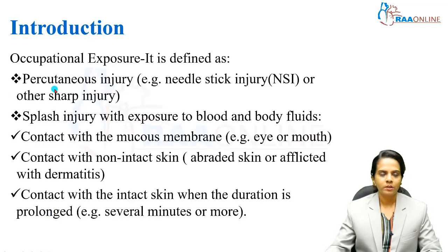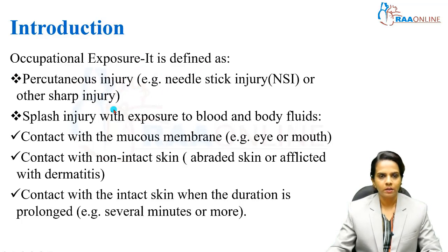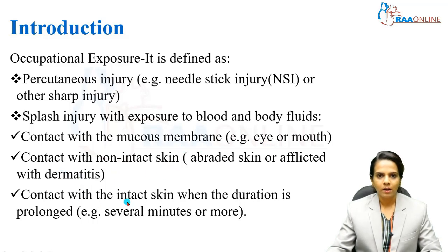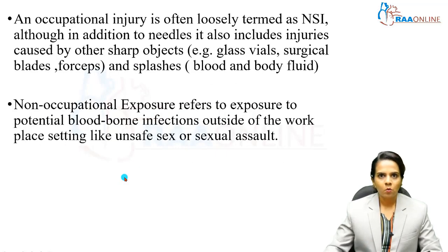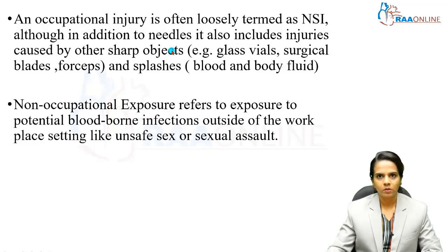Moving on to introduction: what is occupational exposure? It is defined as a percutaneous injury — example, needle stick injury or any other sharp injury — and splash injury with exposure to blood and body fluids, that is contact with the mucous membrane (example: eyes or mouth), or contact with non-intact skin (example: abraded skin or skin afflicted with dermatitis), and contact with intact skin when the duration is prolonged. An occupational injury is often loosely termed as needle stick injury, although in addition to needles it also includes injuries caused by other sharp objects.